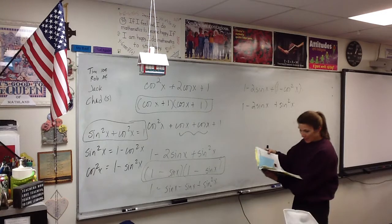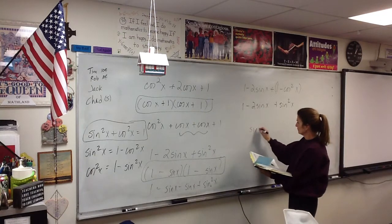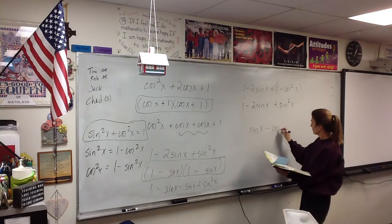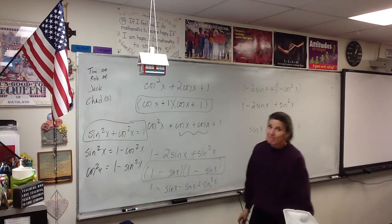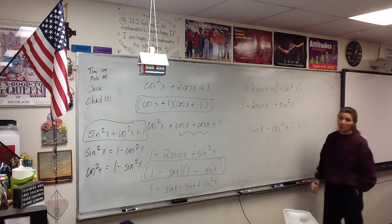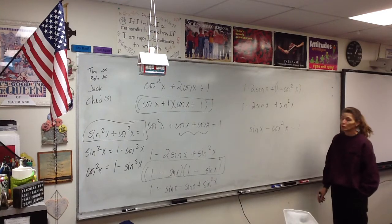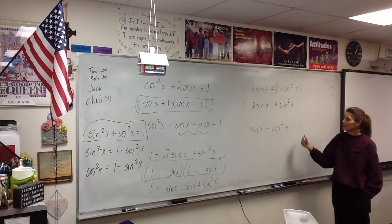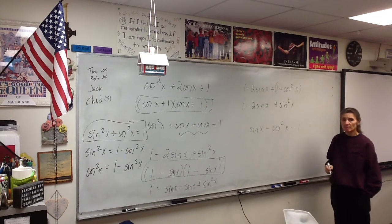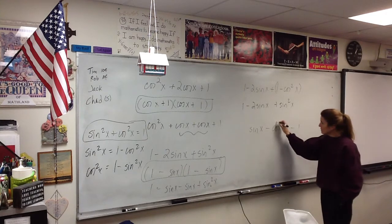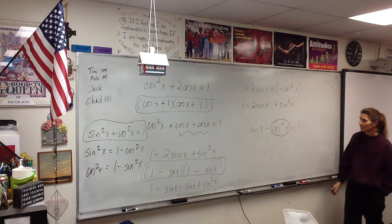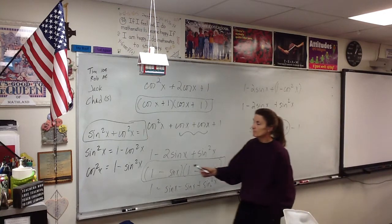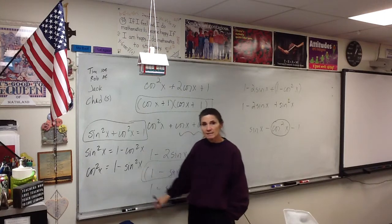Now look at number 42. This one has sines and cosines mixed in it — it doesn't factor neatly. Think about what we just did: what if we replaced cosine squared with 1 minus sine squared? Follow the same substitution approach to transform the expression into something factorable.